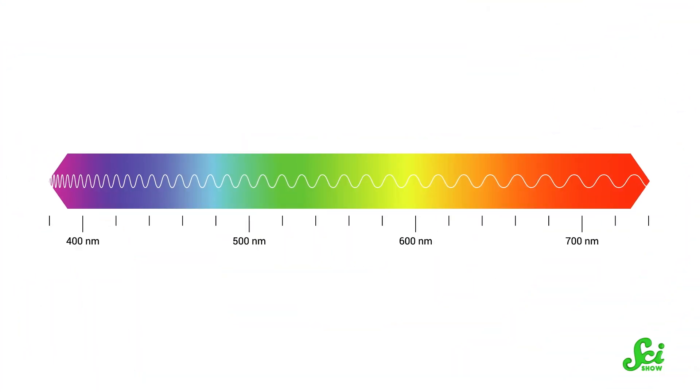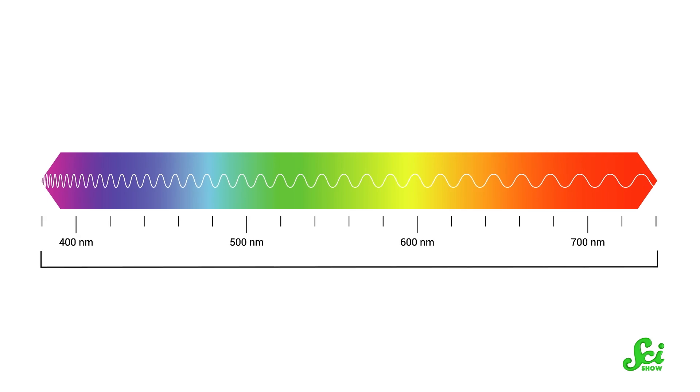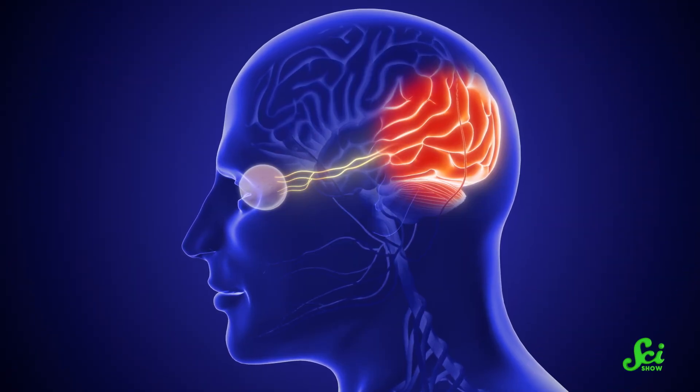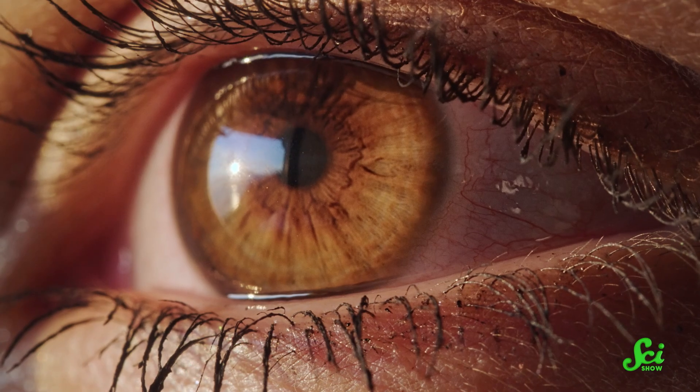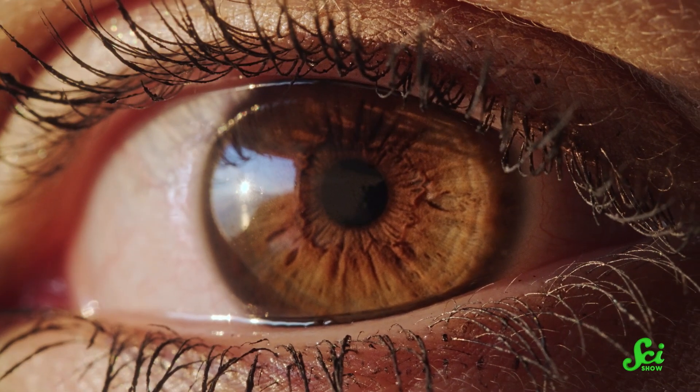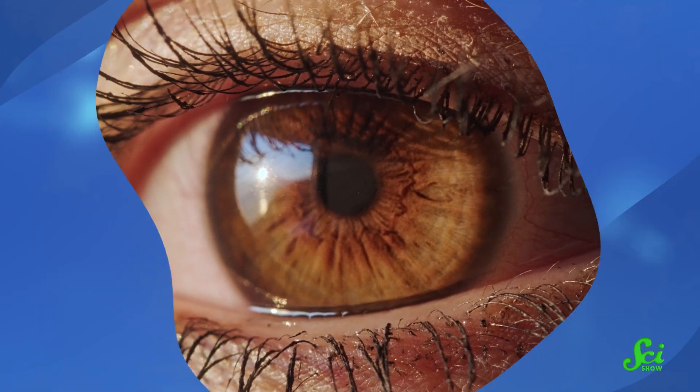Now, our photoreceptors can only respond to certain wavelengths of light, which for humans is between 380 nanometers and about 700 nanometers. Our photoreceptors intercept those wavelengths of light and convert the energy in that light into electrical signals. Then, these electrical signals travel through the optic nerve to the brain, and the brain turns them into an image of the world. So there are a lot of steps that collectively make vision possible. Most of the time, if there's a problem or variation within any of these structures, that'll make it harder to see. But now and then, some variations actually reveal the invisible.